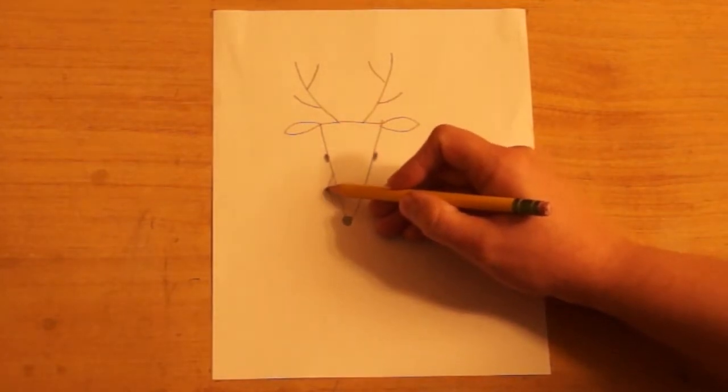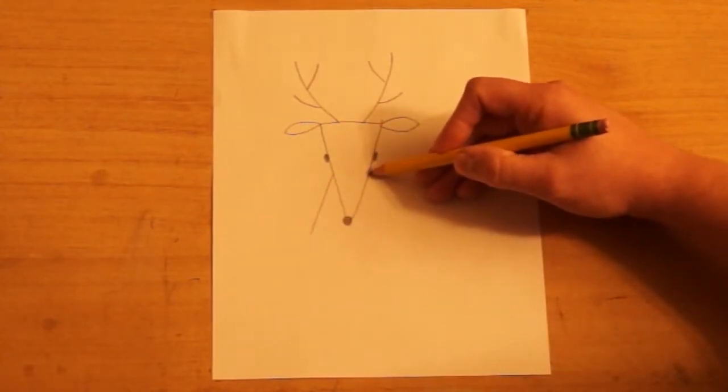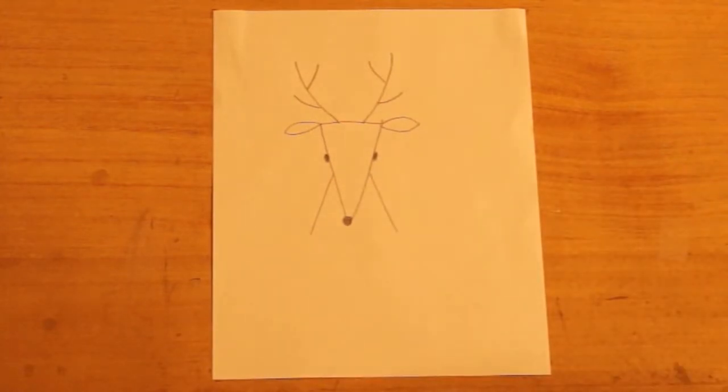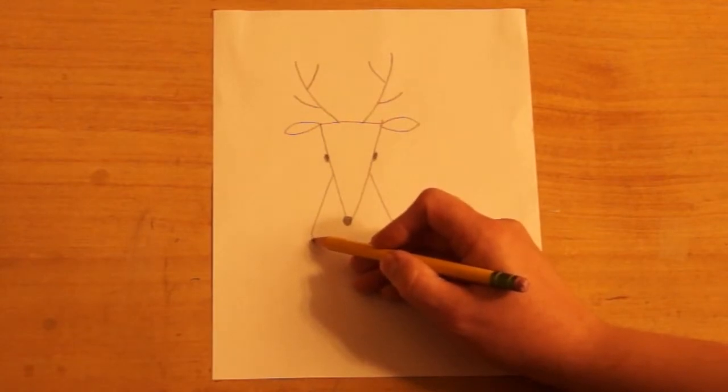Next, I'm going to draw the neck. Two lines that slant down. And then a curve at the bottom.